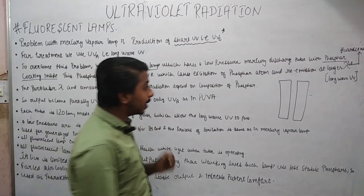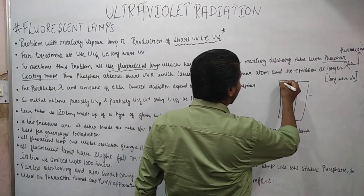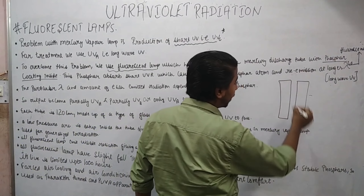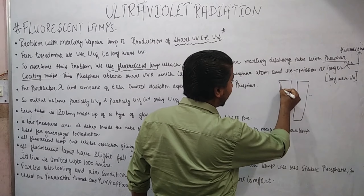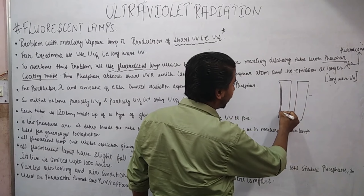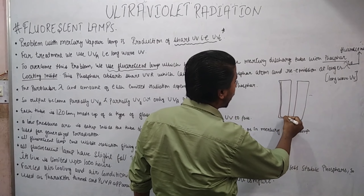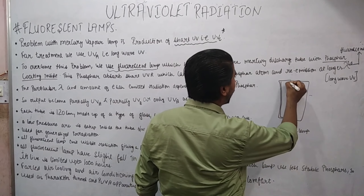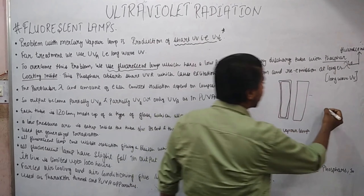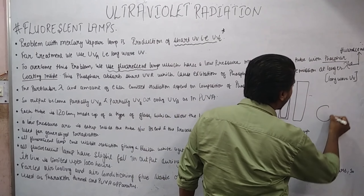That is a bluish white appearance is given. So you can understand it like this: the tube has a coating of phosphor inside, and this is the atom of phosphor.